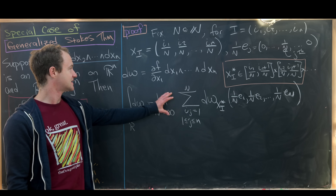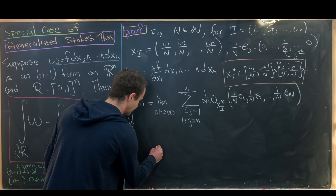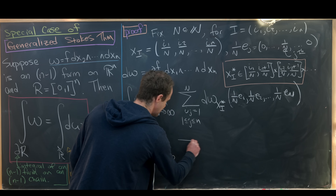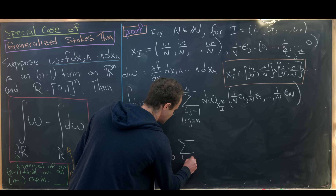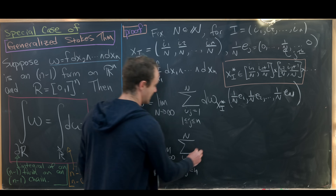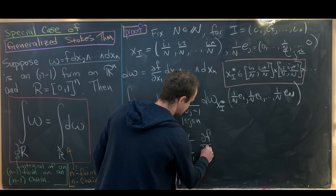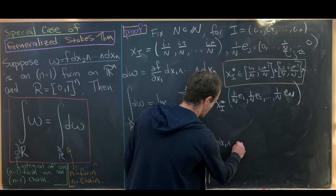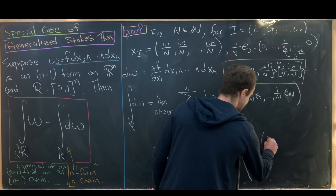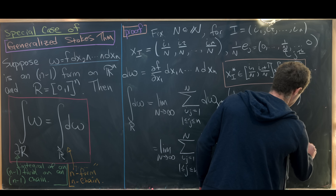Now we can replace d omega with its expression via the definition of the exterior derivative. So we have this limit as capital N goes to infinity of the sum as i_j goes from 1 up to capital N, j going from 1 to n, and then we have (∂f/∂x1) times dx1 wedge all the way up to dxn, evaluated at this set of vectors (1/N)e1 all the way up to (1/N)e_n.